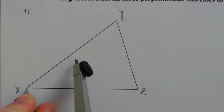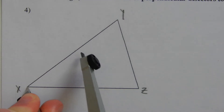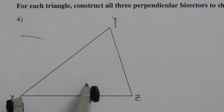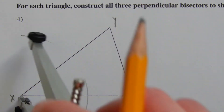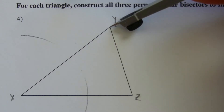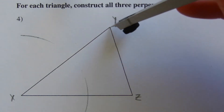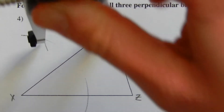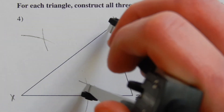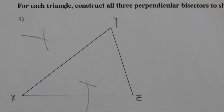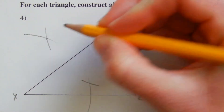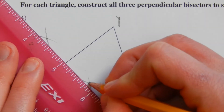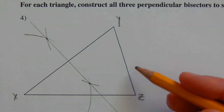From endpoint X, I extend my compass a little more than halfway, draw my mark above and then below. I'll do the same for Y, placing one point of my compass on endpoint Y, drawing slightly above line XY and then slightly below segment XY, looking for the intersection of those marks. Now I can connect those to make the perpendicular bisector of XY.